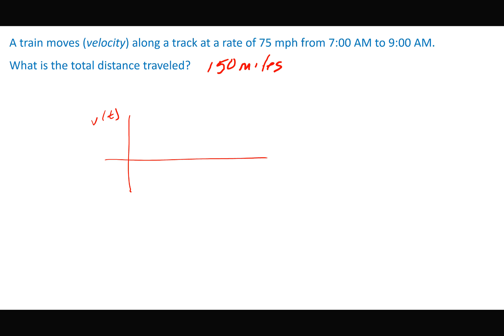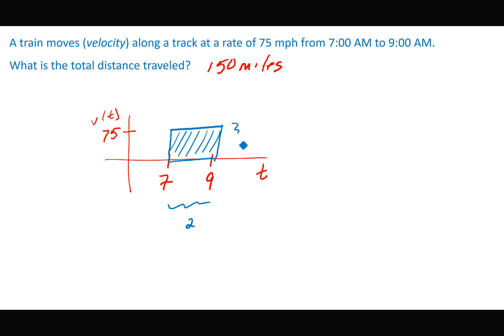We can also record this scenario with a velocity versus time graph. From 7 a.m. to 9 a.m. I'm moving at a constant rate of 75, so it would just be a line segment from 7 to 9. If I think of this as a rectangle, the area is 2 times 75, which equals 150.